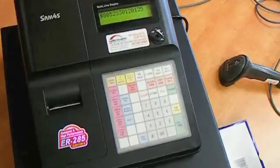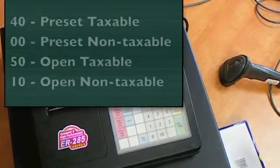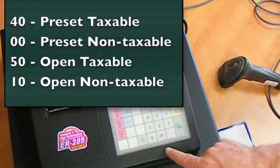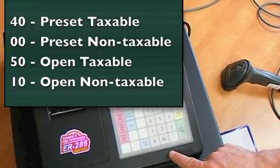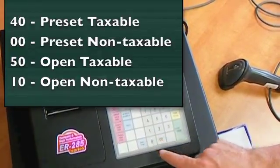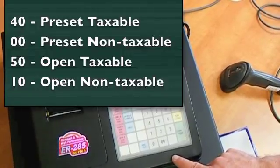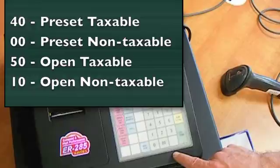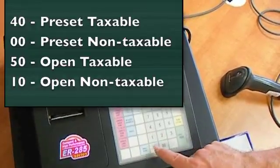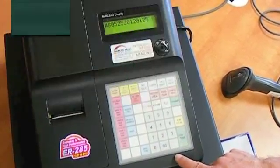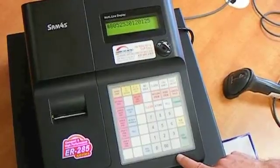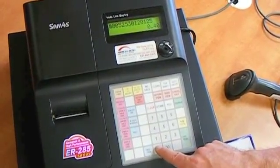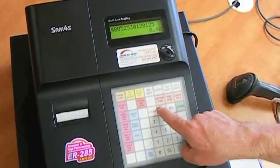Enter a status code from the following options: for a preset taxable item enter 40, for a preset non-taxable item enter 00, for an open taxable item enter 50, or for an open non-taxable item press 10. We are going to program a preset taxable item, so we will enter 40.